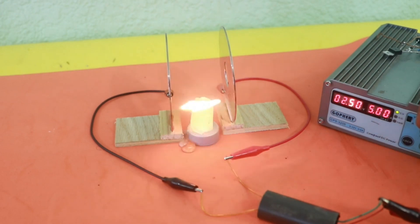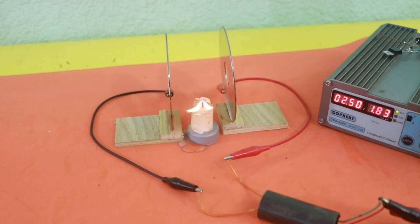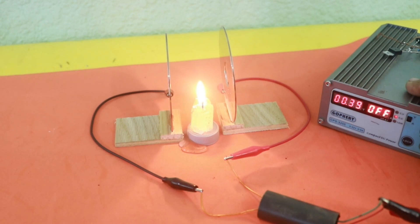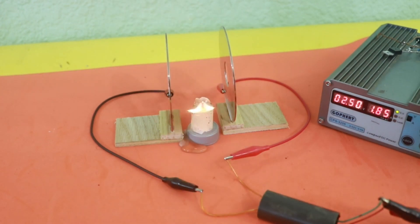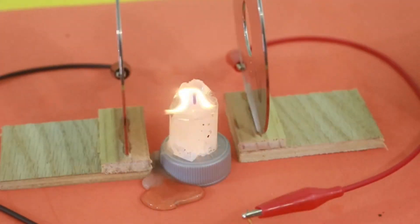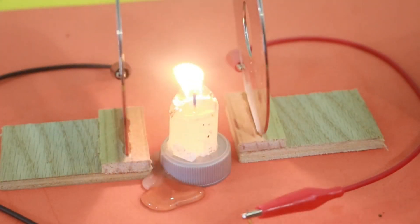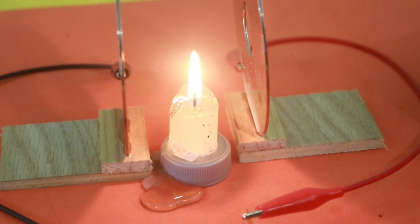And you can clearly see the effect of the ionic wind in the flame. If we turn off, normal flame. Turn on, wind on the flame. Off, on.